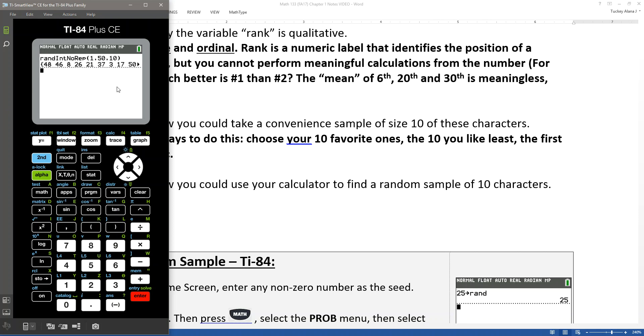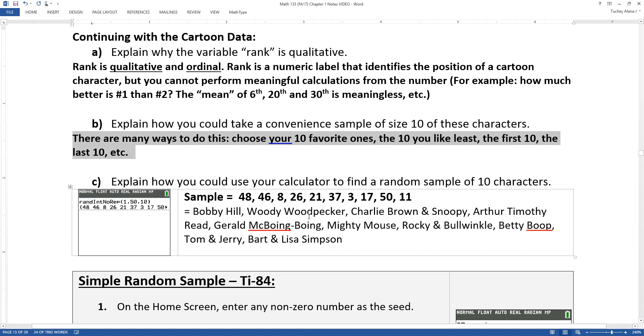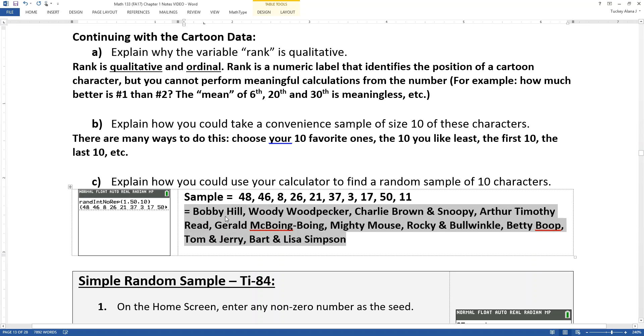It will give me a sample of 50, like cartoon number 48, cartoon number 46, et cetera, et cetera. And I can go from there and figure back out what those cartoons were. There, I typed up my sample.